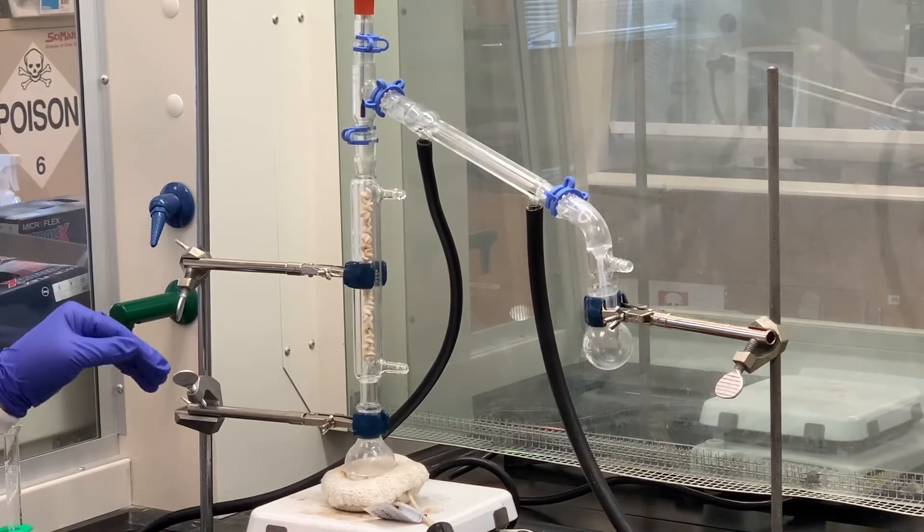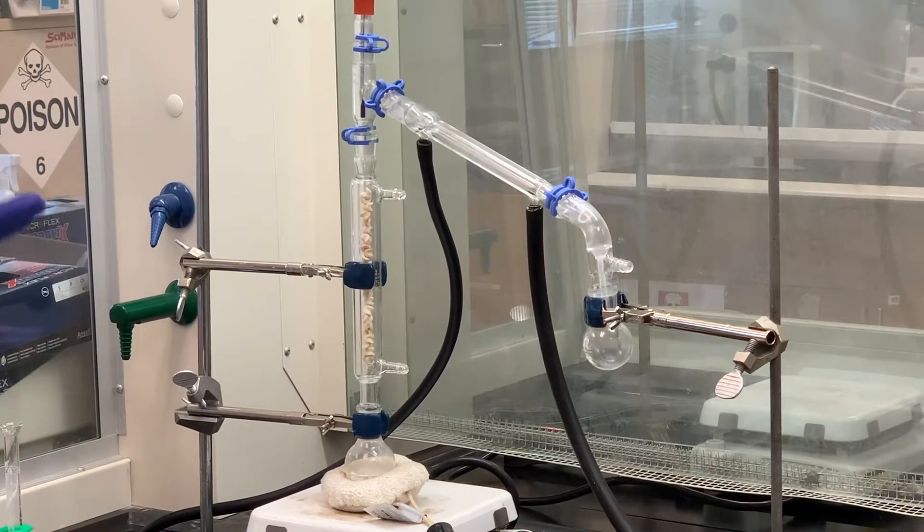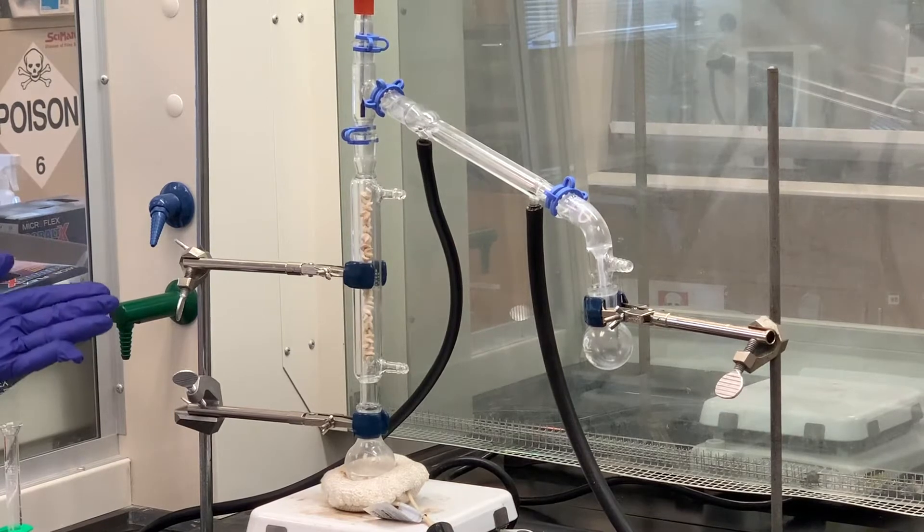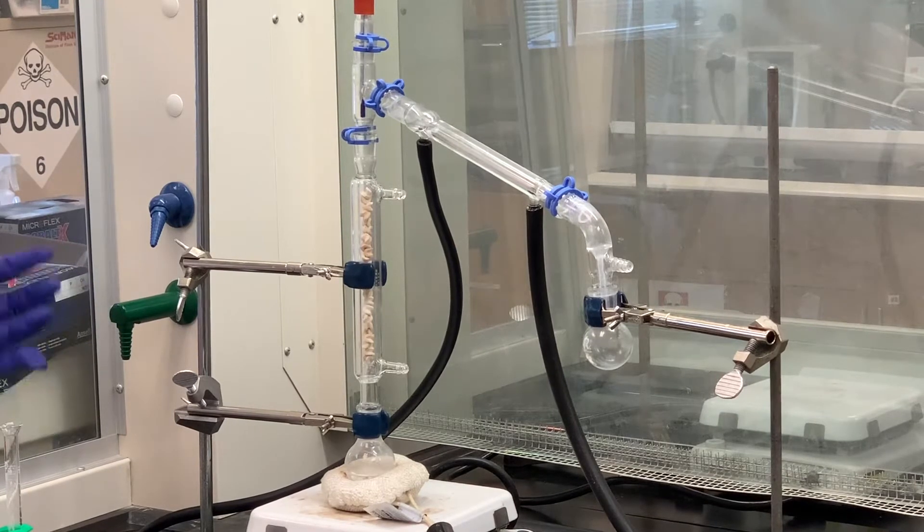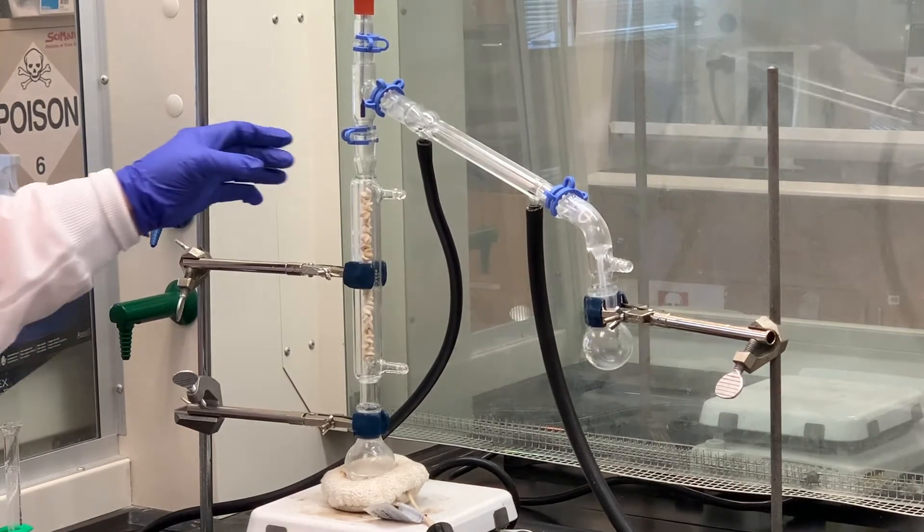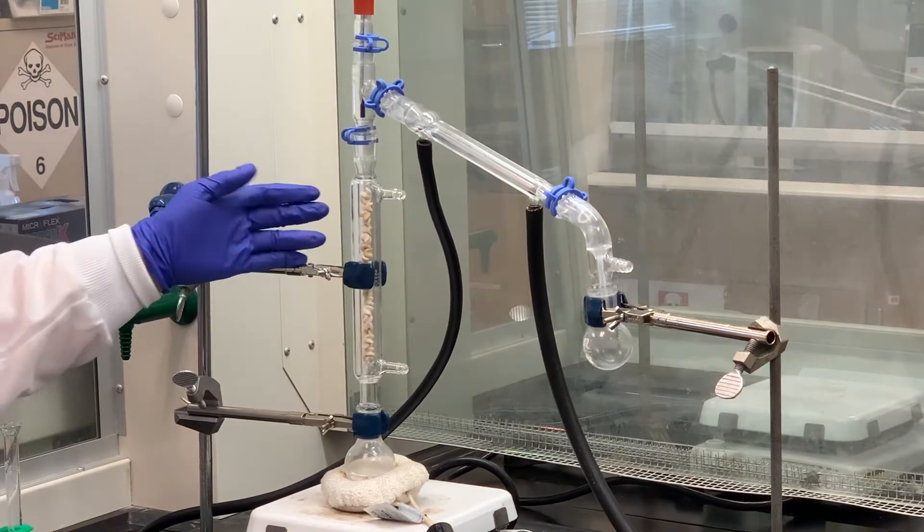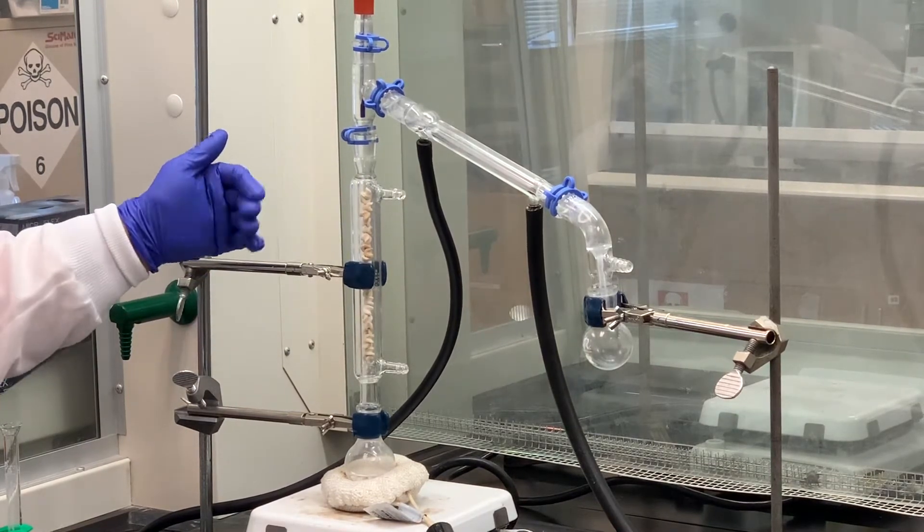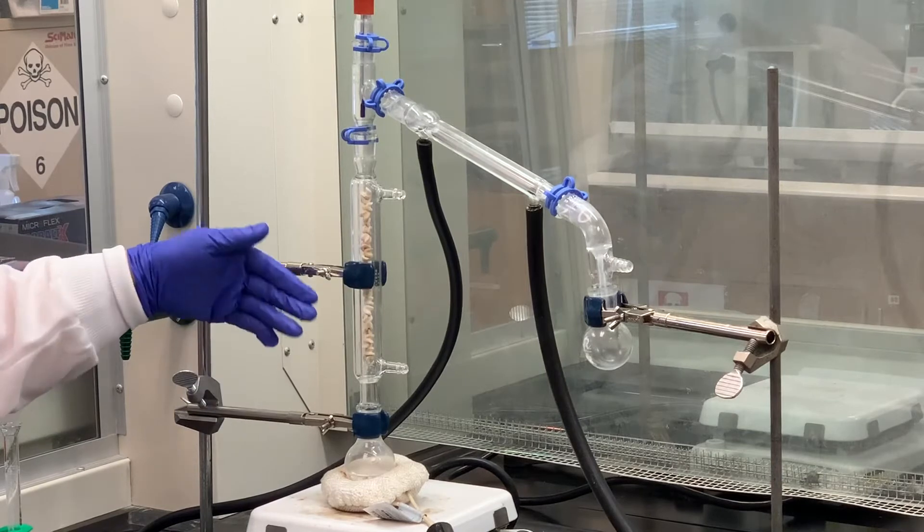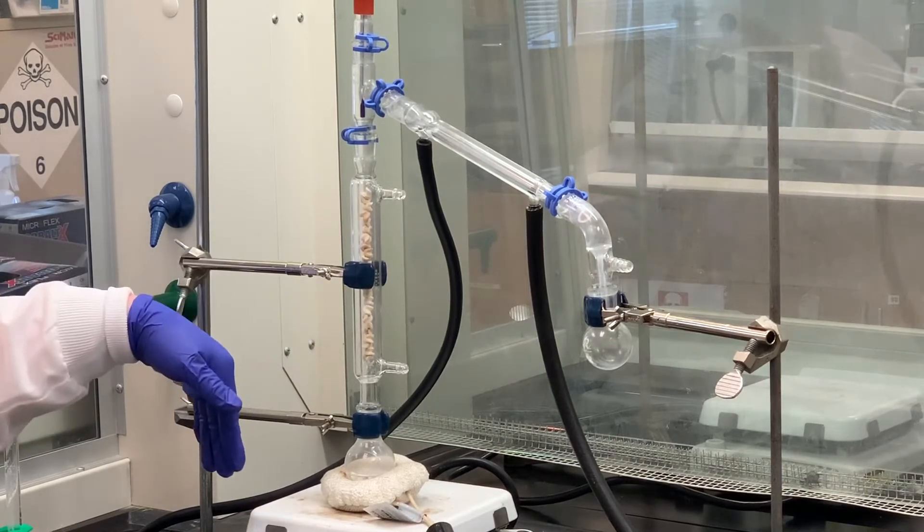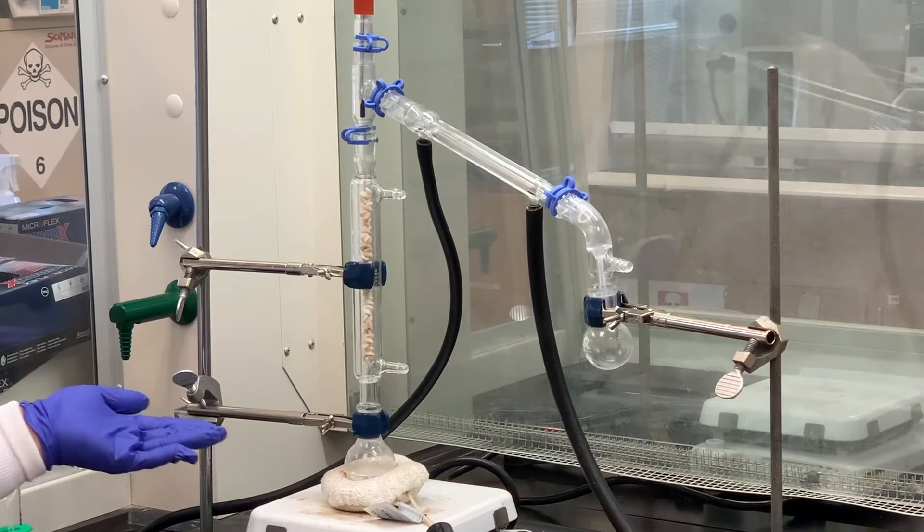Or what could happen is that once that leaving group leaves, the protonated OH group, then the water could come in and take off one of the hydrogens, the alpha hydrogen of the cyclohexanol. And when that happens, then we will form a carbon-carbon double bond. That's your elimination reaction.